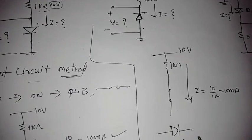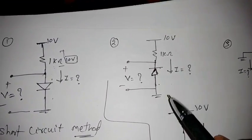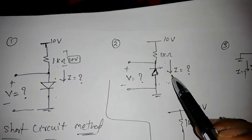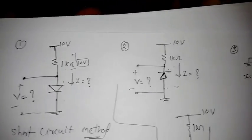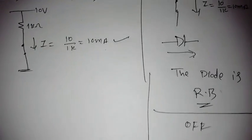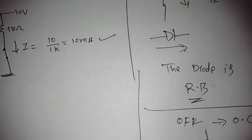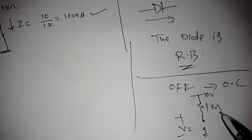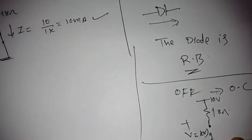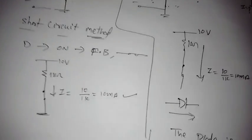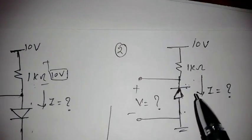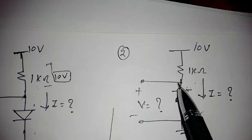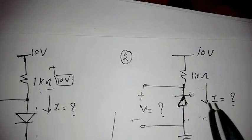We should always get current flowing from anode to cathode, positive to negative. But here current is going from cathode to anode, so the diode is reverse biased. When the diode is reverse biased it is off, and off means open circuit. So with open circuit and 1 kilo ohm and 10 volts, there is no current, so directly V is equal to 10 volts. Looking at the circuit, the 10 volt source is connected to the negative terminal of the diode, and the positive terminal is connected to 0. Since 0 is less than 10 volts, the anode voltage is less than the cathode voltage — so it is in reverse bias.